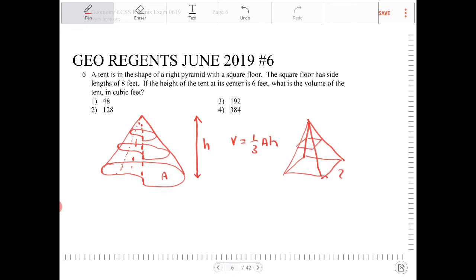The side length here is 8. This is 8. And the height is 6. So therefore the volume is simply one-third times eight squared times 6.